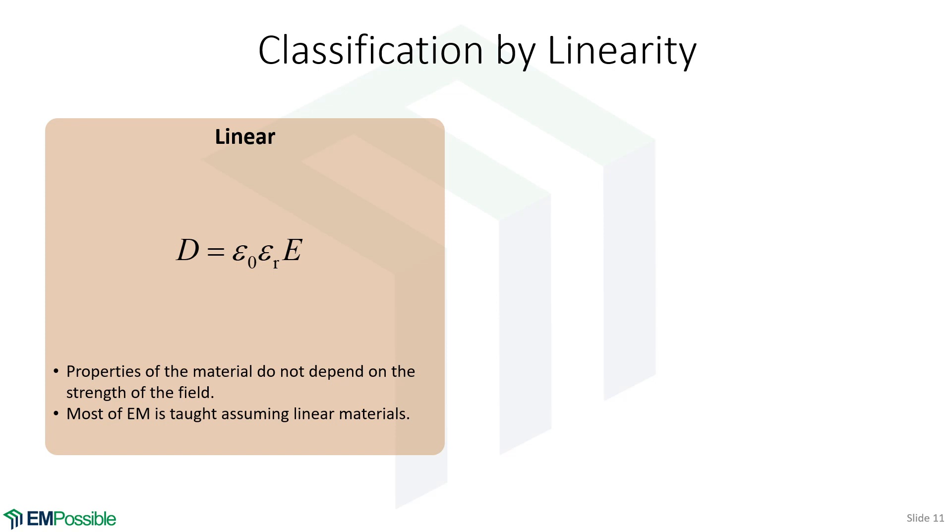We can classify materials by linearity. And by that, linear materials is what we're used to. We have this constitutive relation, D equals epsilon E. And this permittivity, notice when the electric field changes its value, the permittivity stays the same. Everything's kind of ordinary. And nothing sort of magically arises out of this.